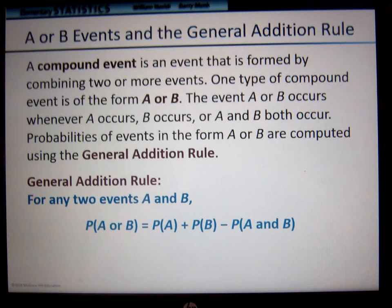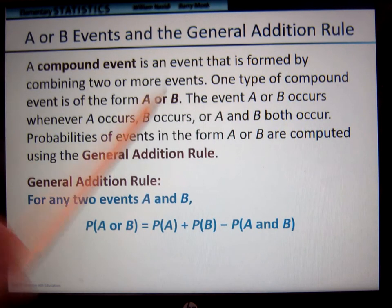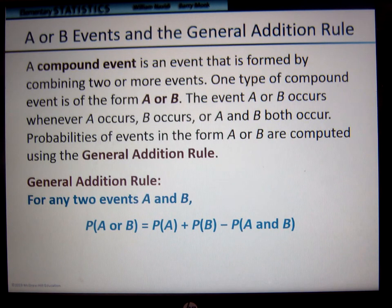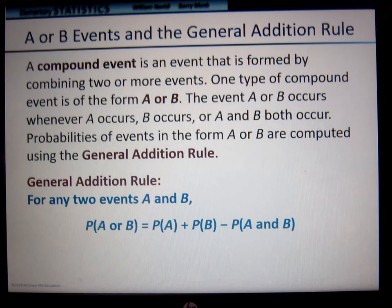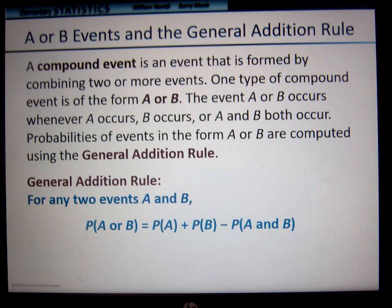So we have a compound event, which is an event that is formed by combining two or more events. One type of compound event is in the form of A or B. The event A or B occurs whenever A occurs, B occurs, or both A and B occur. Probabilities of events in the form A or B are computed by using the general addition rule.